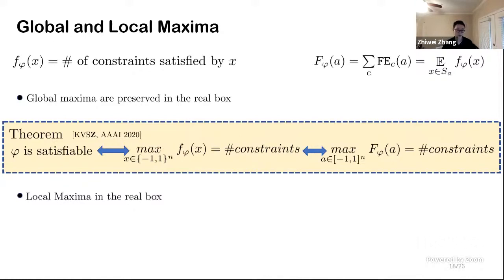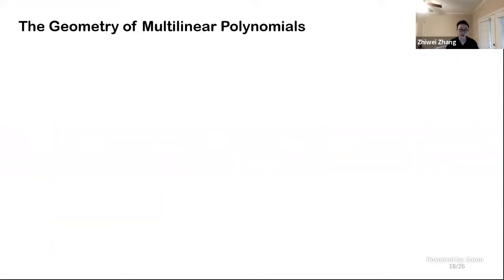It's not always realistic to converge to a global maxima. So we have to consider the case where we go to a local maxima. Can we say anything about local maxima? To answer this question, we need to study the geometry of multilinear polynomials.